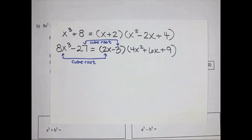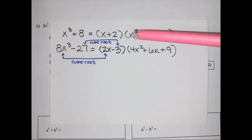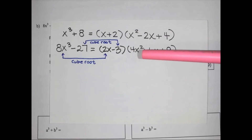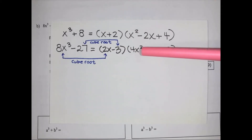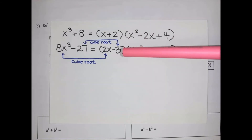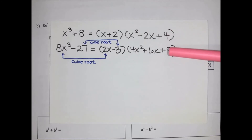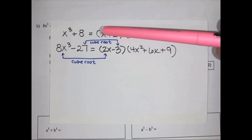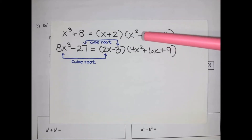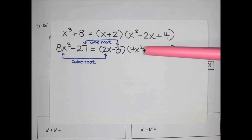The second bracket is a different story. The first term in the second bracket is just the first term of the first bracket, squared. So x squared is x squared, and 2x squared is 4x squared, because 2 squared is 4. The last term comes from squaring the last term of the first bracket — 2 squared is 4 and negative 3 squared is positive 9, because squaring always gives a positive. The middle term comes from multiplying the two terms of the first bracket together — x times 2 is 2x, and 2x times 3 is 6x — but with the opposite sign to what was in that first bracket.